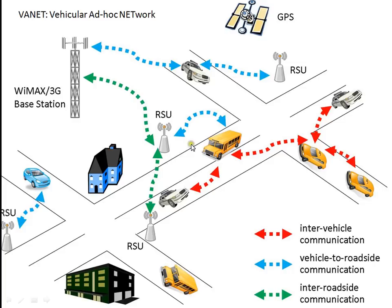So let's take a look at the kinds of things you might do in a VANET. There are basically three things: one is safety management, another is traffic management, and a third is internet services, like YouTube or any other internet service.